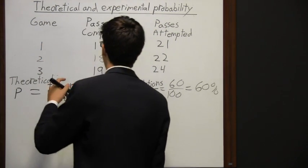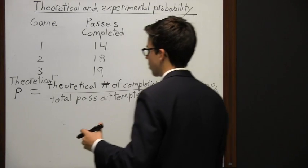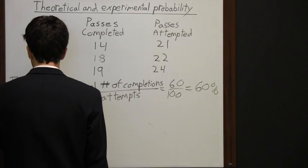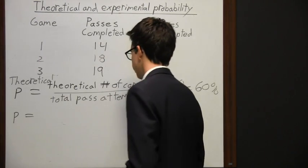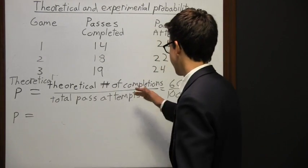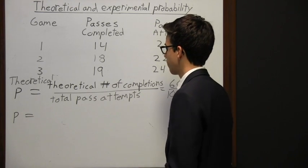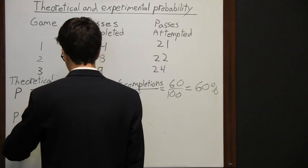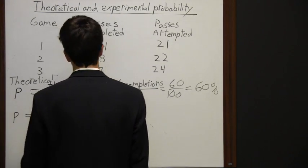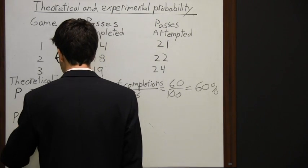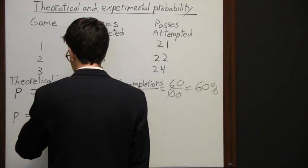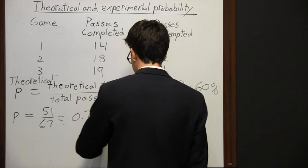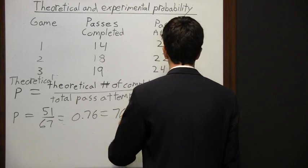We also have data from three games. If we look at this probability, we're going to do the same thing — take the number of completions and put it over the total pass attempts. In this case we have 51 completions over 67 pass attempts, which translates to 0.76, or 76 percent.